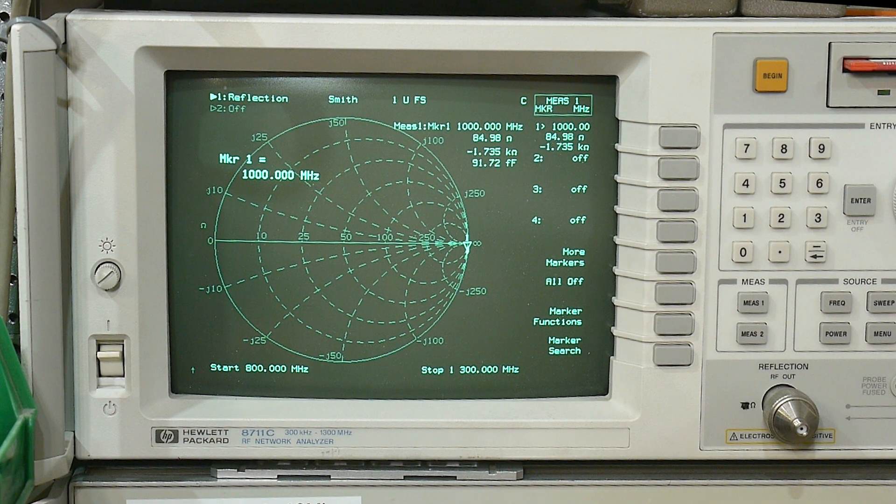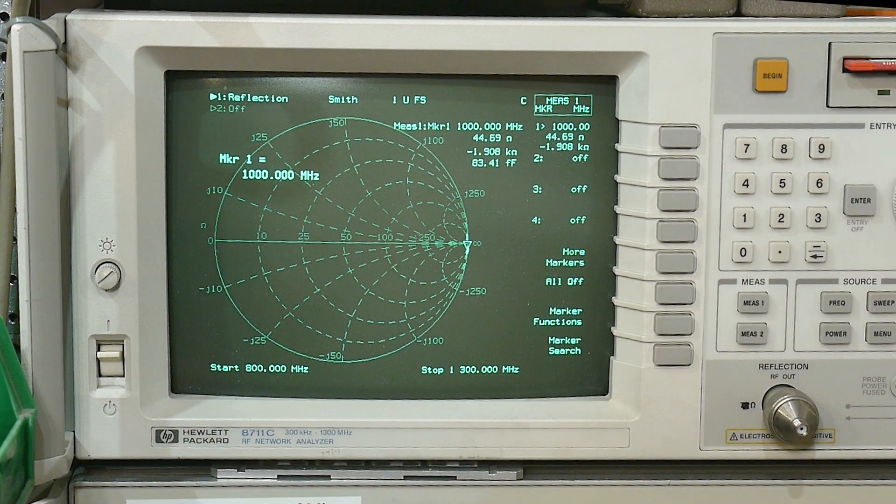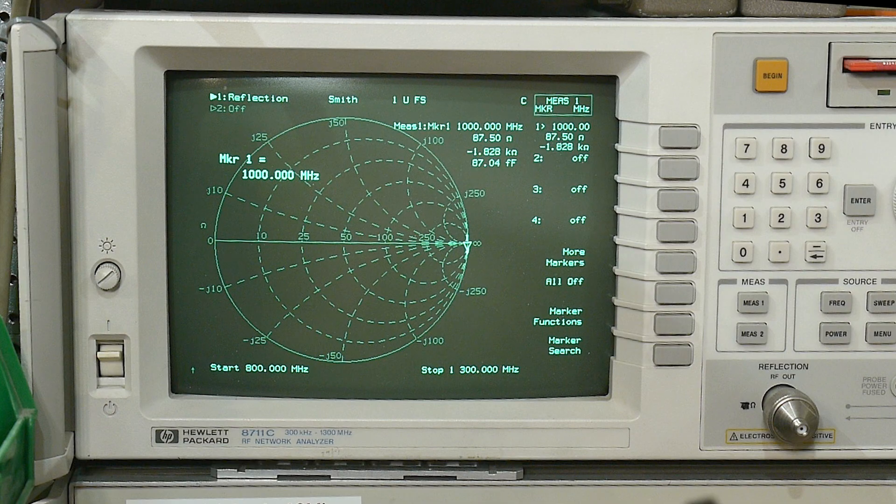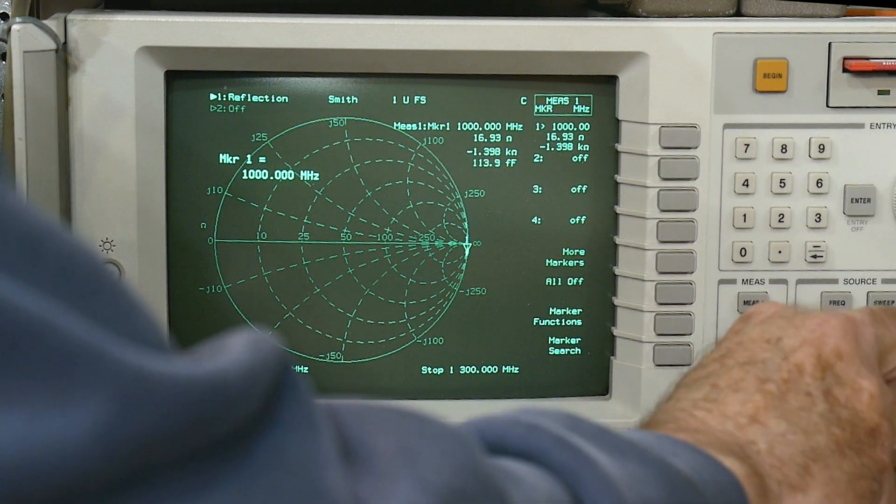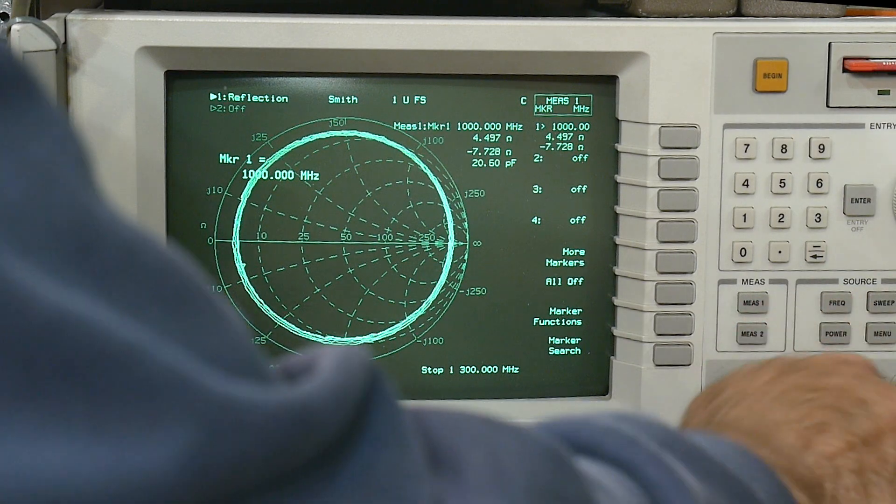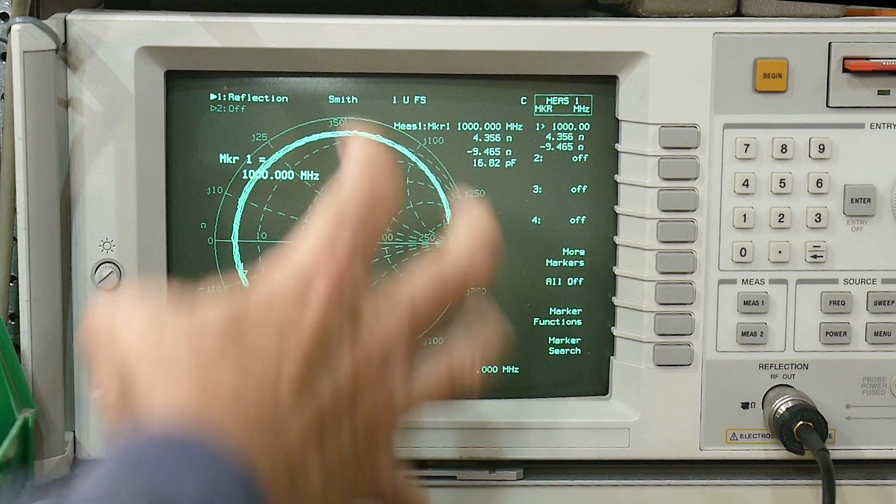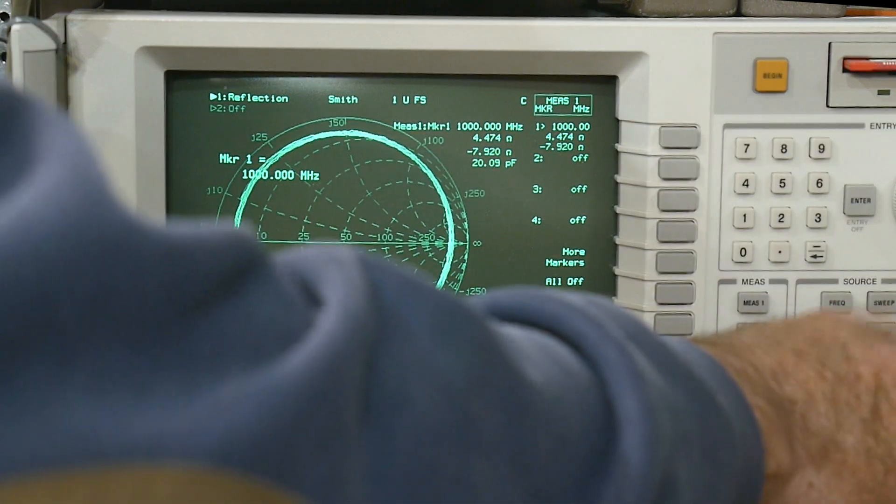let's see here. What other cables do I have? Here is a test cable. It's SMA to BNC. but it is RG58. Okay. So this is standard RG58. And we can see that it is quite lossy. this circle has shrunk in. So RG58.